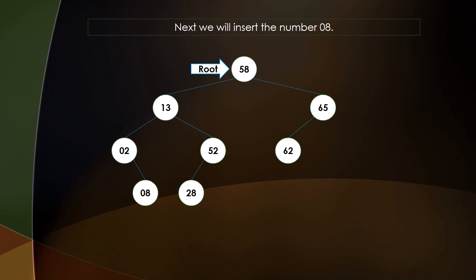Finally we have 8. Since 2 is already a child of 13, we move to the next level. Since 8 is greater than 2, it is placed in the right subtree of 2 as a right child node. This completes the binary search tree, with 58 always remaining the root node.